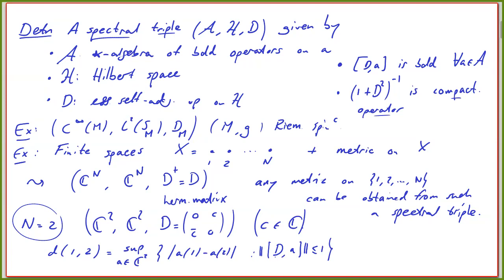As a little computation — an illustrative exercise — this commutator boils down to C times (A₁ − A₂). So the norm of the commutator equals |C| · |A₁ − A₂|. Taking the supremum over all such A, we get the bound |A₁ − A₂| ≤ 1/|C|. You can actually compute this supremum and find it to be 1/|C|. So the Dirac matrix D encodes the metric in a very concrete manner for the two-point space.